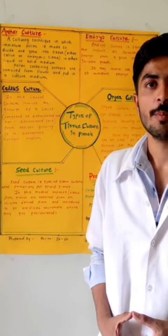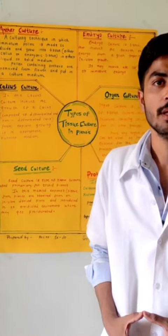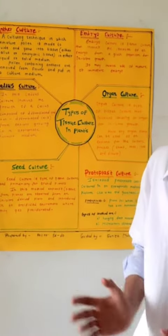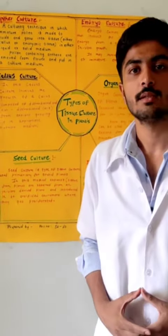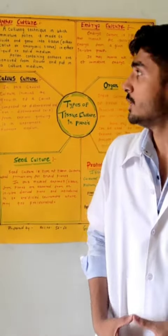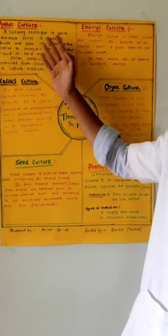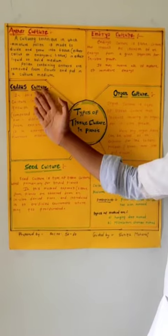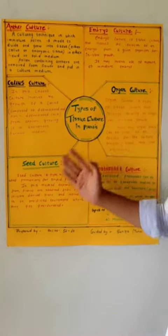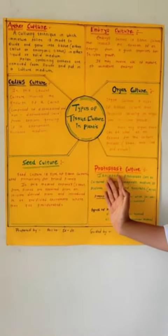Hello everyone, my name is Abhishek Barpayee and today we are going to discuss the topic of tissue culture in plants, in which we are going to see various methods of tissue culture which are anther culture, embryo culture, callus culture, organ culture, seed culture, and protoplast culture.